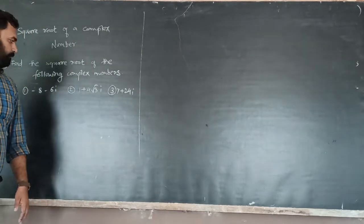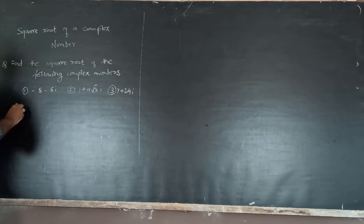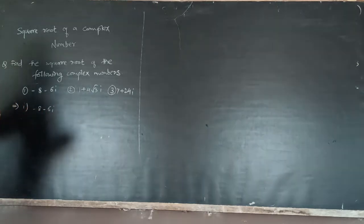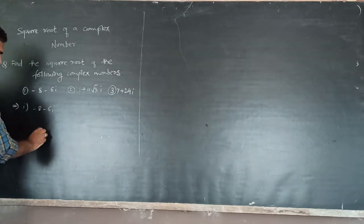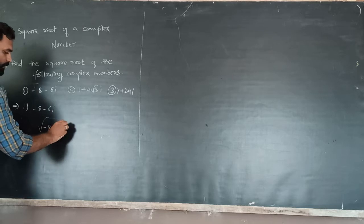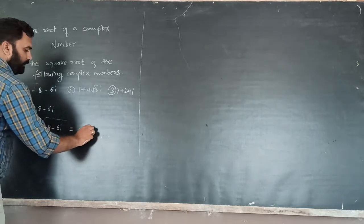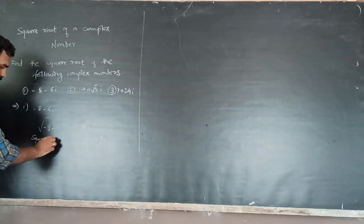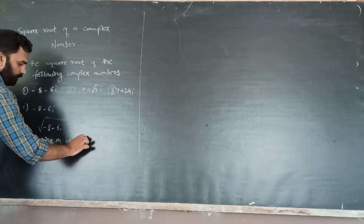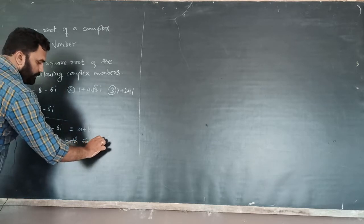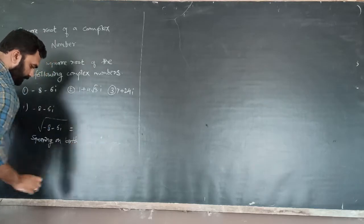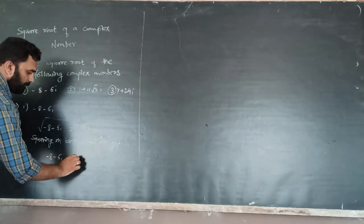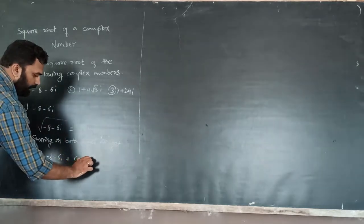Example number 1: minus 8 minus 6i. We have to find the square root. So we write: square root of (minus 8 minus 6i) is equal to a plus bi. Squaring on both sides, we get minus 8 minus 6i equals (a plus bi) squared.